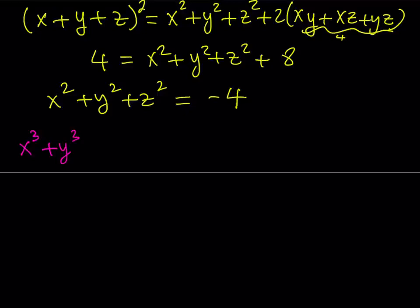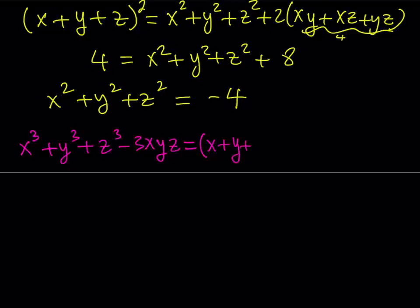The identity is x cubed plus y cubed plus z cubed minus 3xyz. If you have a polynomial like this, it is divisible by x plus y plus z. You can prove that by replacing x plus y plus z with 0, or x plus y with negative z. When we factor it, the other factor is x squared plus y squared plus z squared minus xy minus xz minus yz.